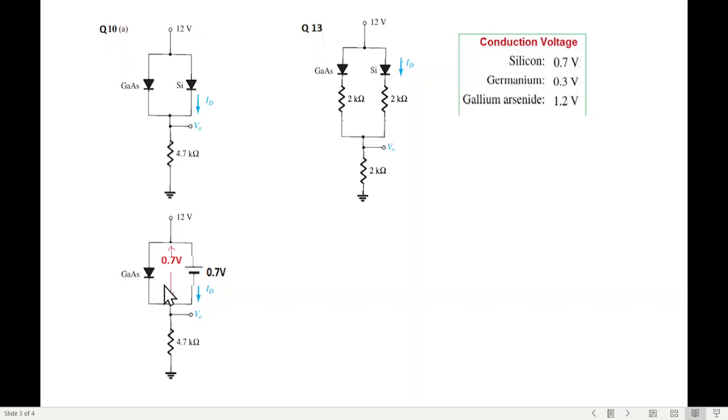Therefore this will never get 1.2 volt and therefore gallium arsenide diode will not conduct. And so generally we show it by a cross, or sometimes we cut it away already. All right, and this is the only circuit left, then we can solve. Now I will give you the links of both the questions so you can follow.